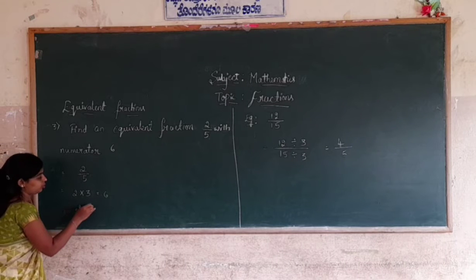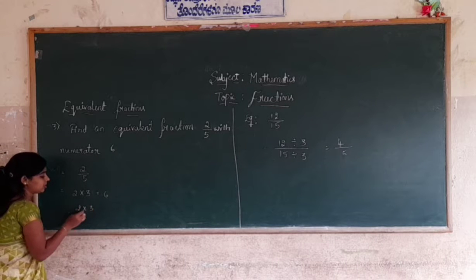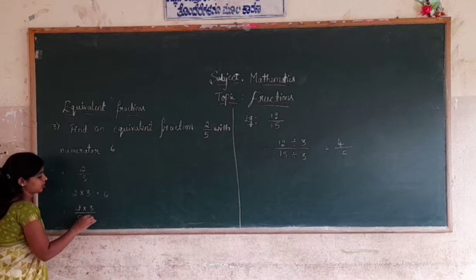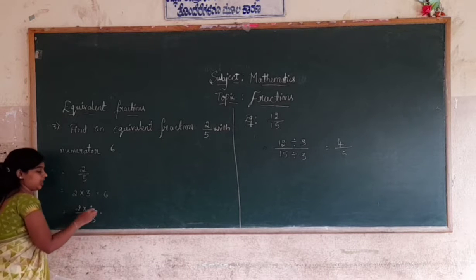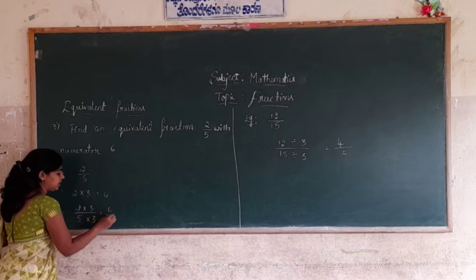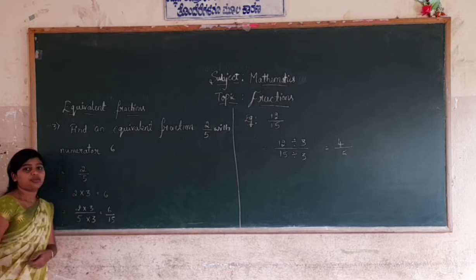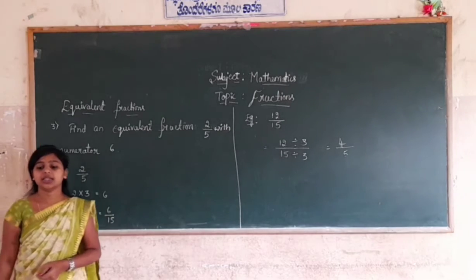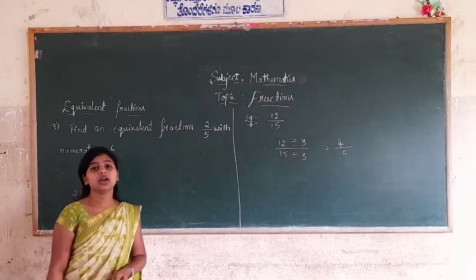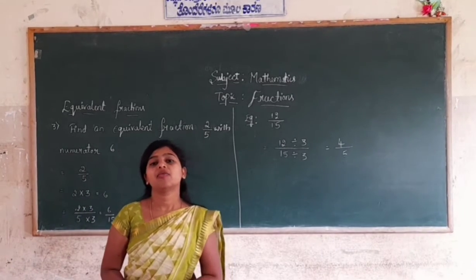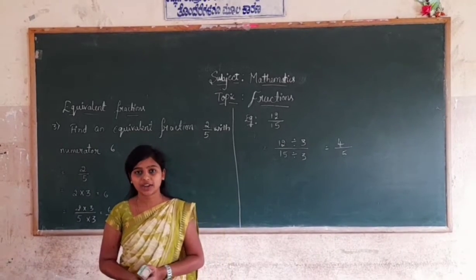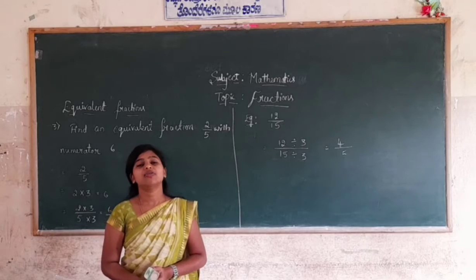So: 2 × 3 = 6 and 5 × 3 = 15. Therefore, the equivalent fraction of 2/5 with numerator 6 is 6/15. Next, find an equivalent fraction of 50/35 with denominator 7.